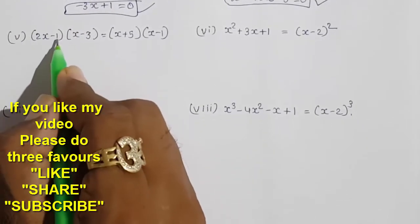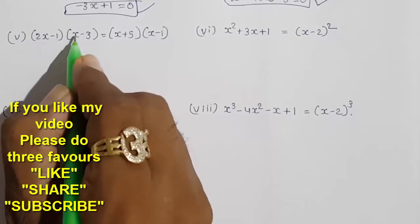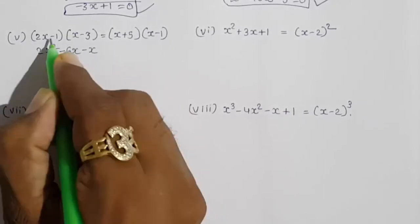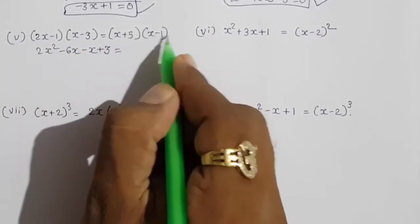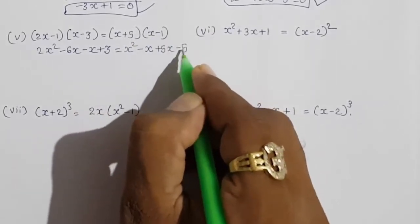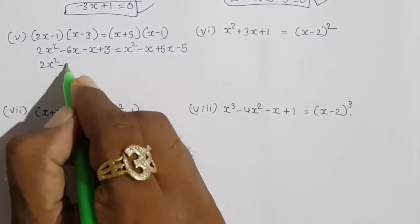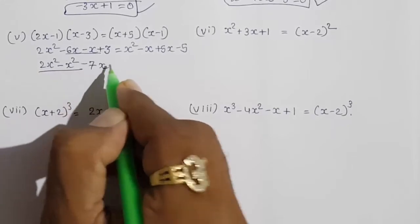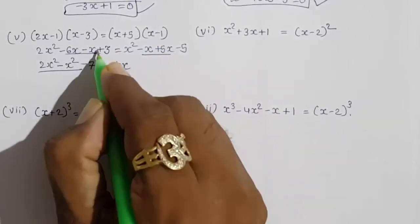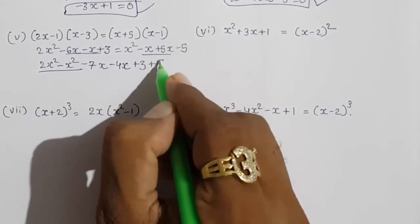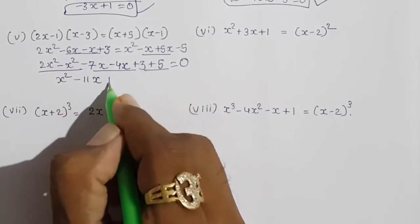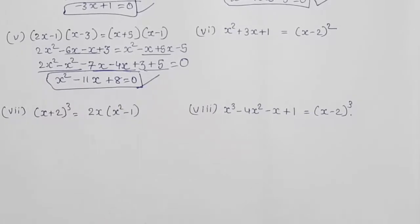Moving towards the fifth question: (2x minus 1) times something. Again, binomial with a binomial. 2x into x = 2x², 2x into minus 3 = minus 6x, minus 1 into x = minus x, minus 1 into minus 3 = plus 3. Also x into x = x², x into minus 1 = minus x, 5 plus 5x, and x into minus 1 = minus 3. Taking all to one side: 2x² minus x², then minus 6x minus x = minus 7x, and minus 1 plus 5x = plus 4x, so minus 7x plus 4x = minus 3... wait, giving minus 4x. Plus 3, minus 5 goes that side giving plus 5 = 0. So 2x² minus x² = x², minus 11x plus 8 = 0. This is also forming a quadratic equation.